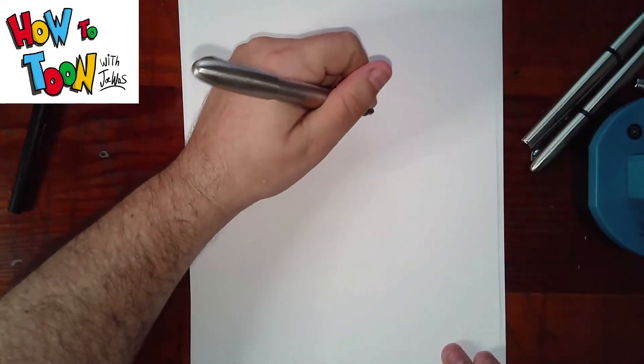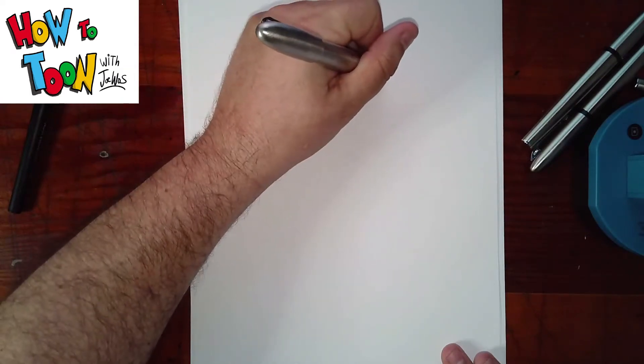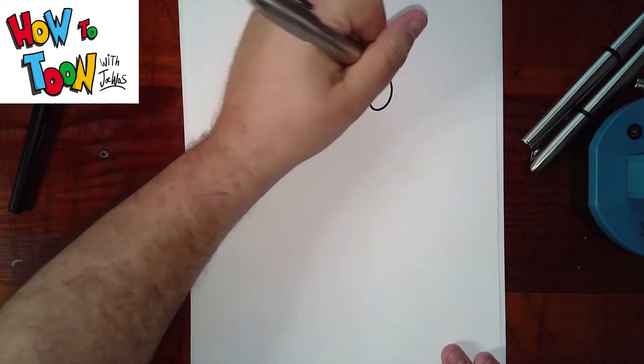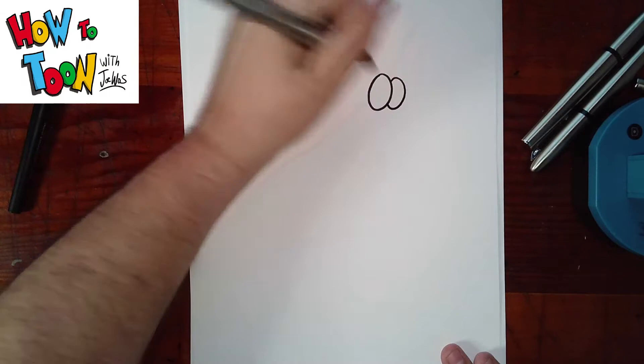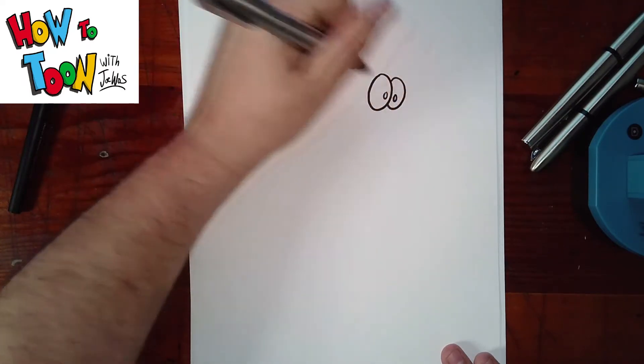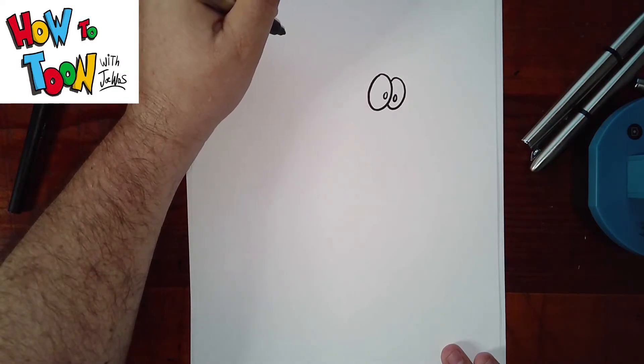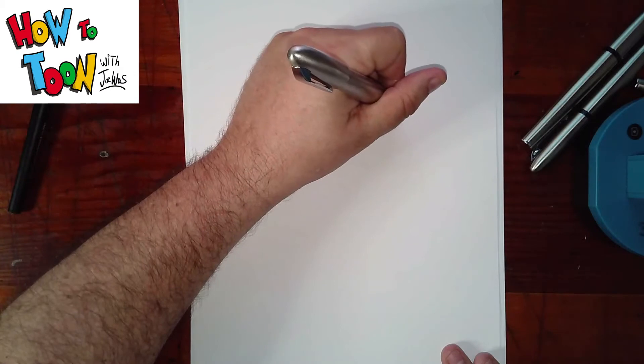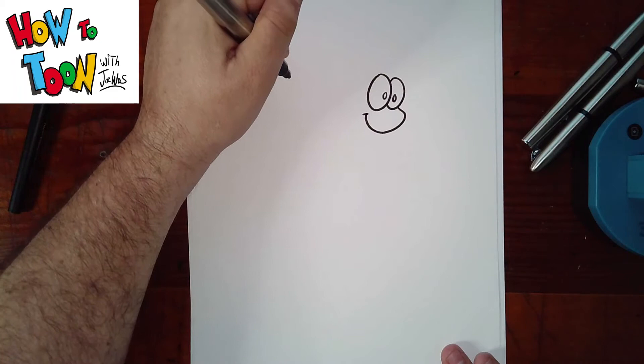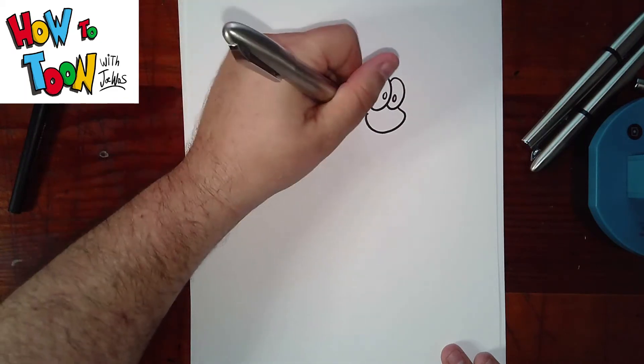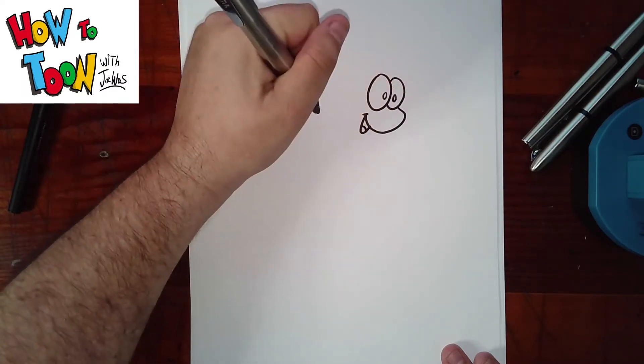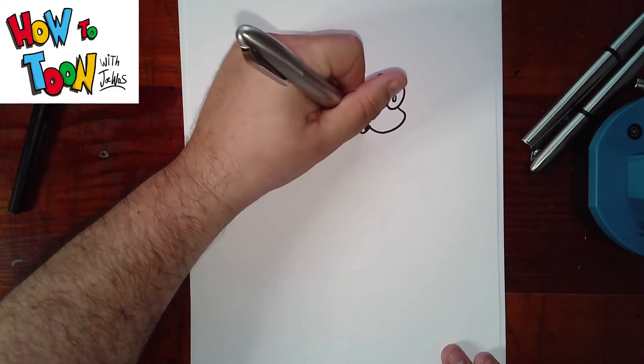So we're going to start off with our worm. Circle or oval, letter C, backwards, a period, and a period. Out, slightly, in, dash, down, and up, the U, tongue, and then shade in.